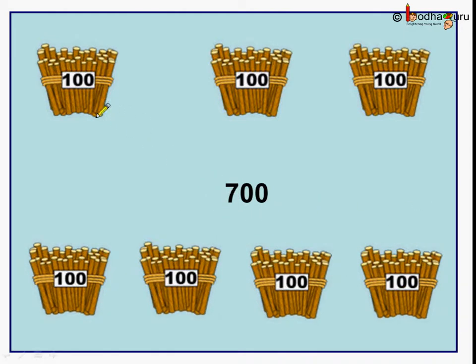And here we have 1, 2, 3, 4, 5, 6, 7. Seven bundles of 100 which means 700.